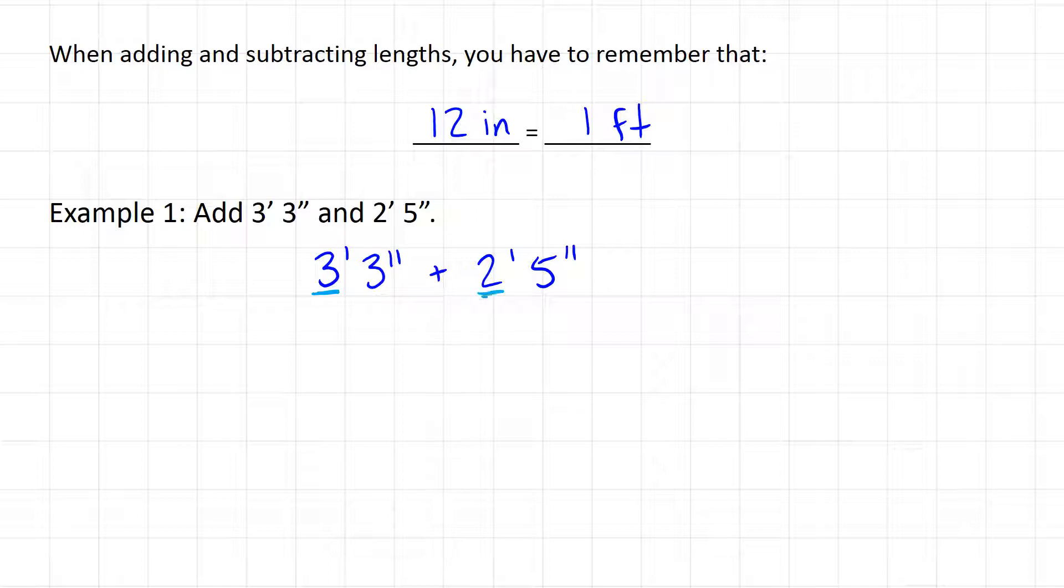start is add together the feet first and then add together the inches after. So 3 feet plus 2 feet is going to give us 5 feet, and then 3 inches plus 5 inches is going to give us 8